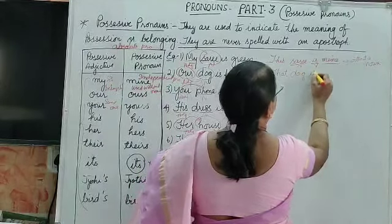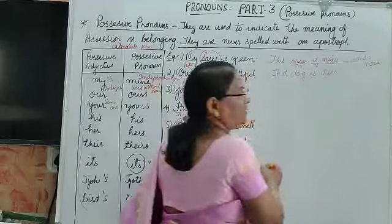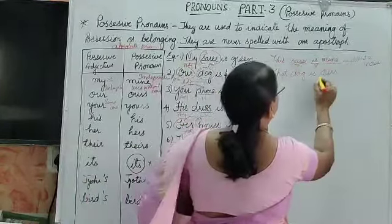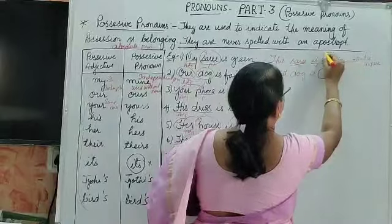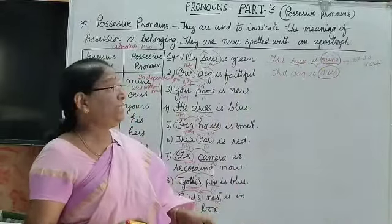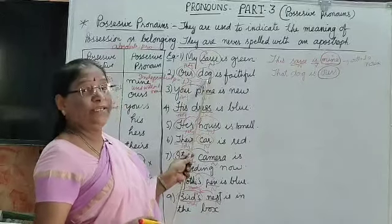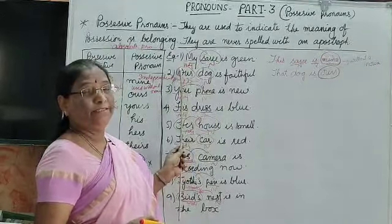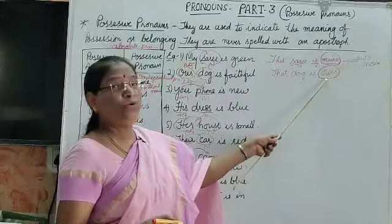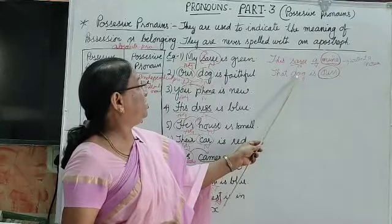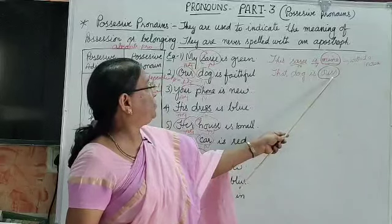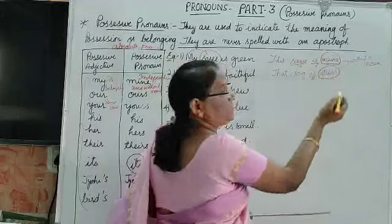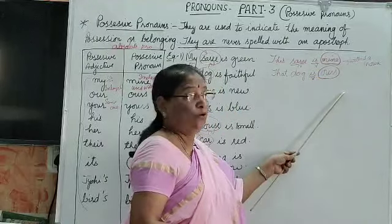In the same way: 'That dog is ours' — this is a possessive pronoun. Compare: 'Our dog is faithful' uses 'our' as adjective plus noun. But in 'That dog is ours,' there is no noun next to 'ours' — it is used with a verb. So 'ours' is a possessive pronoun.